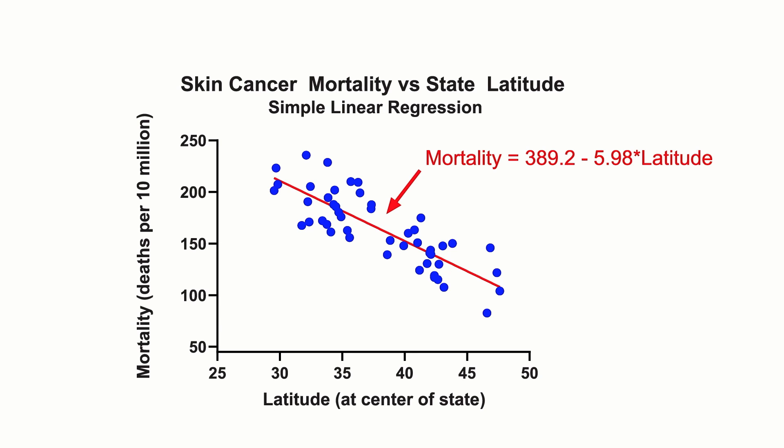Although, since there are no data at a latitude of zero, this prediction relies heavily on the relationship maintaining its linear form outside the range of the data.